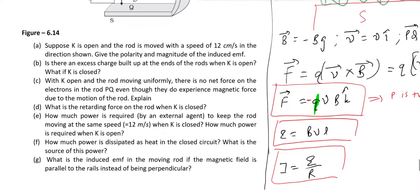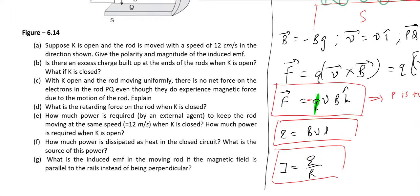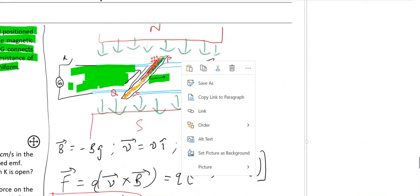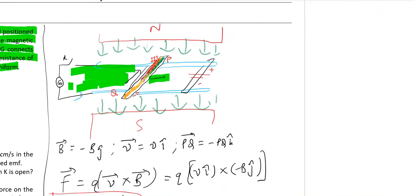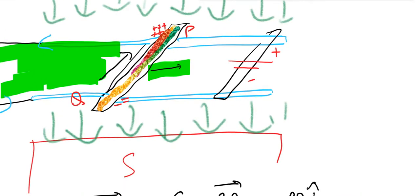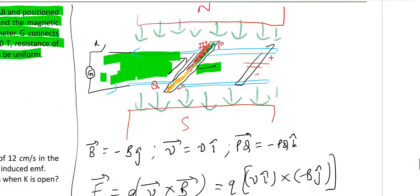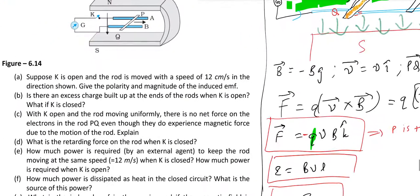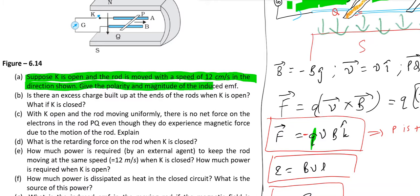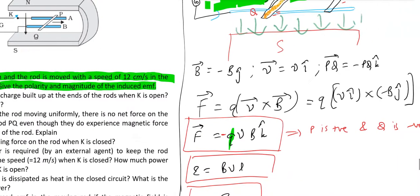So first question is: suppose K is open. Now when K is open, you don't have any current flowing through this wire. So you just have EMF developed along PQ, but there is no current. Suppose K is open and the rod is moved with speed 12 cm per second in the direction shown. Give the polarity and magnitude of induced EMF.